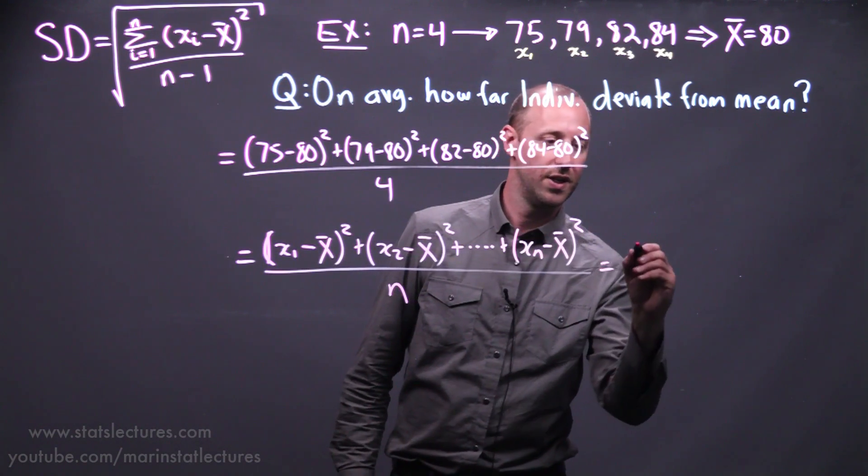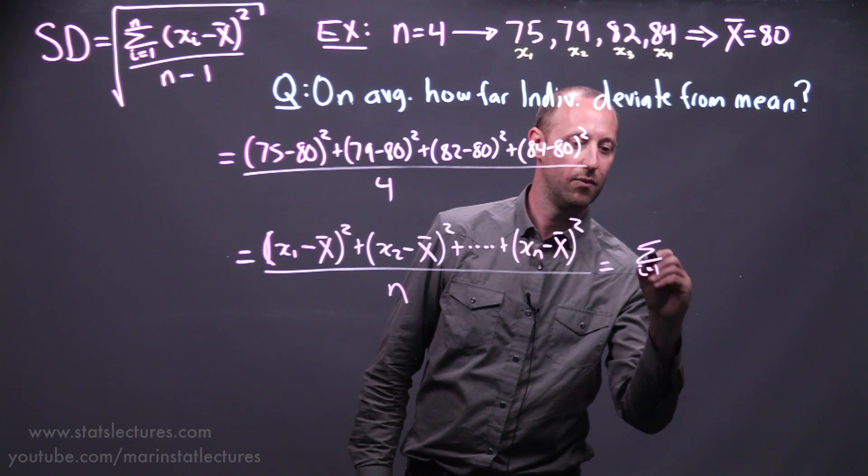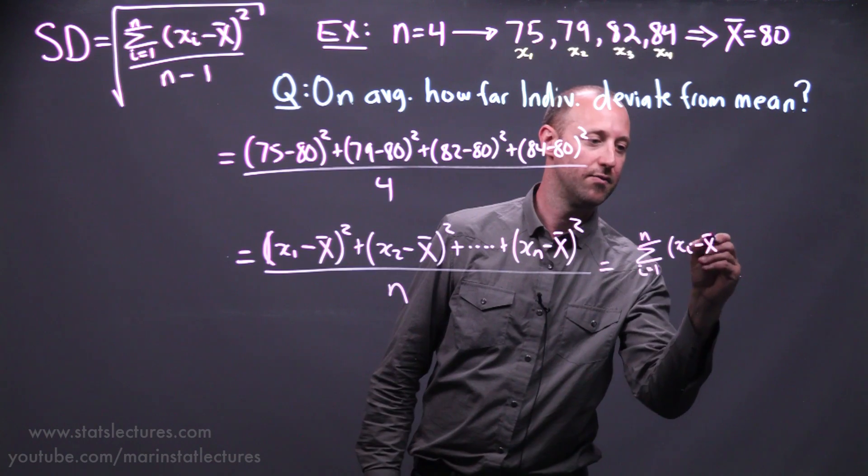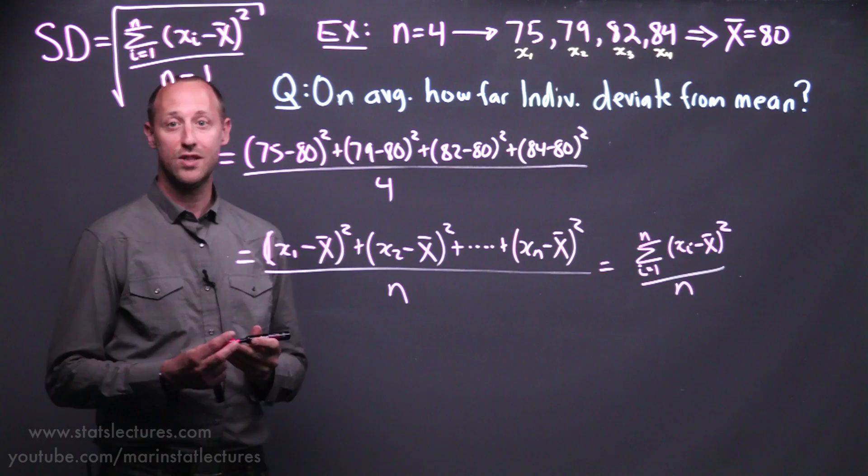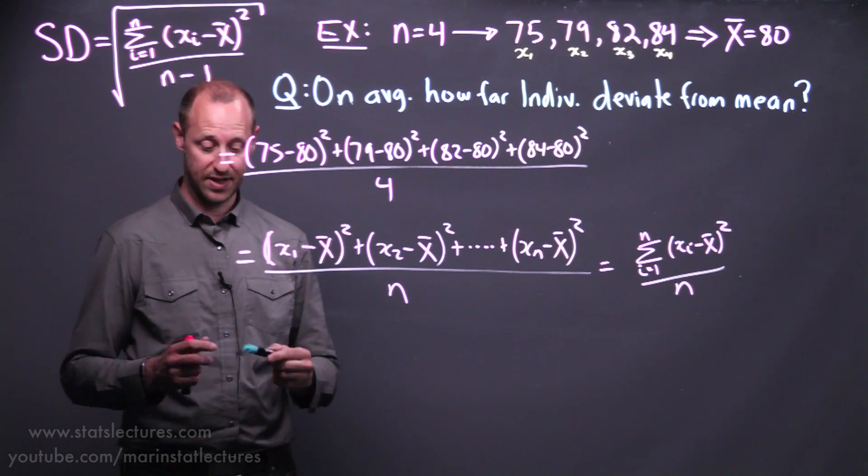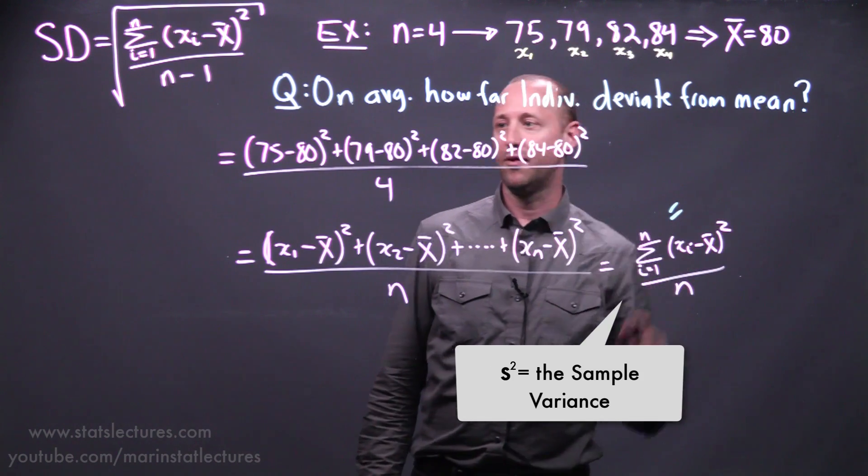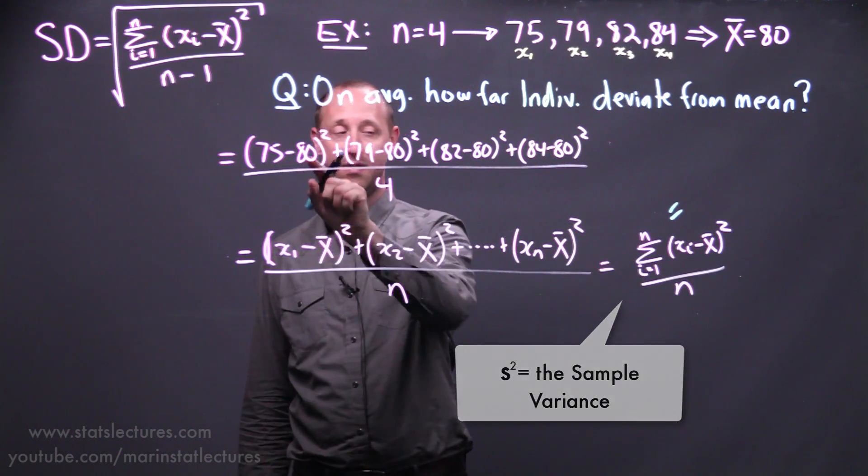Again, writing it in notation. Here we're summing from i going from 1 up to n. How far is xi from x-bar squared over n. We can see this formula here. It has a name. This gets called the variance. Here are the sample variance. And if we look at this, we're calculating the average of the squared deviations.